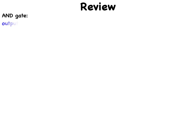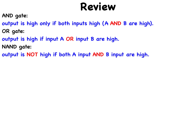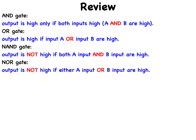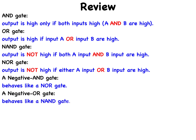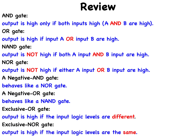In review: AND gate — output is high only if first input and second input are both high. OR gate — output is high if input A or input B are high. NAND gate — output is not high if both the first input and the second input are high. NOR gate — output is not high if either the first input or the second input are high. A negative AND gate behaves like a NOR gate. A negative OR gate behaves like a NAND gate. Exclusive OR gate — output is high if the input logic levels are different. Exclusive NOR gate — output is high if the input logic levels are the same.